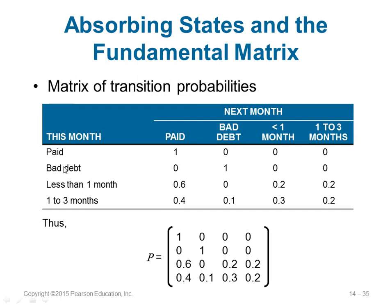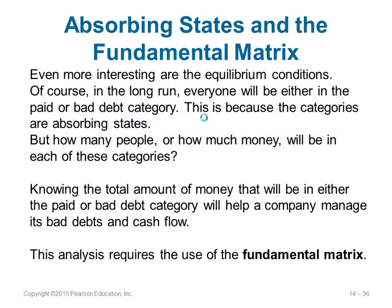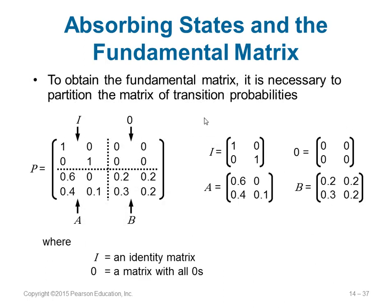These are the typical four states and their matrix of transition probabilities P is given. If you continue through this process, you will either end up in the paid state or in the bad debt state — these two are the absorbing states. We want to know how much of the money will end up in the paid case and how much in the bad debt state. For this purpose we use what is called the fundamental matrix.